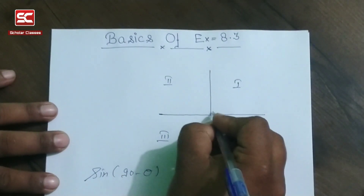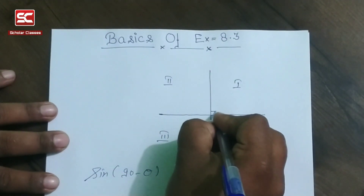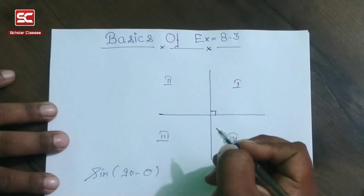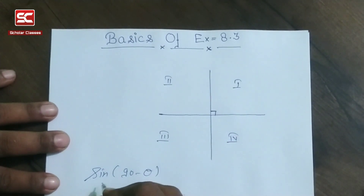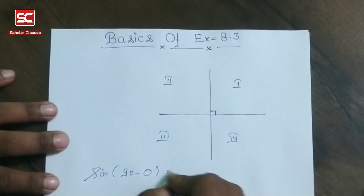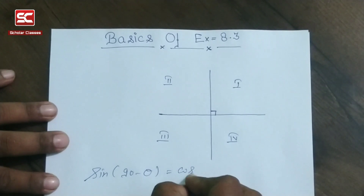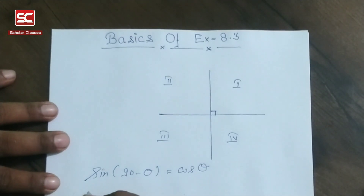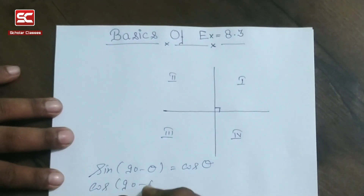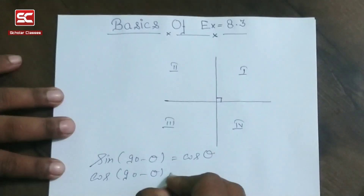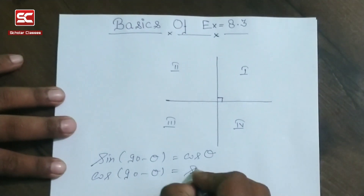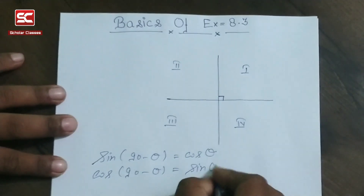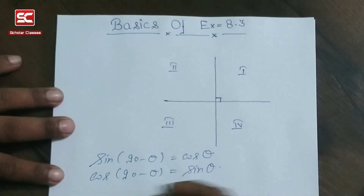We know that sin(90 minus theta) — here the angle is 90 — the value of sin(90 minus theta) is equal to cos theta. And cos(90 minus theta) is equal to sin theta.